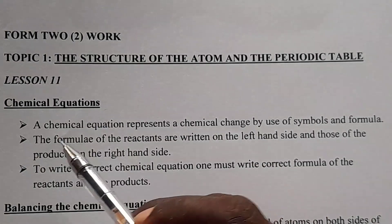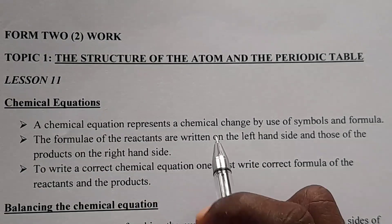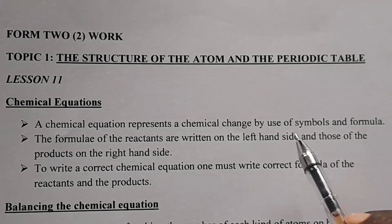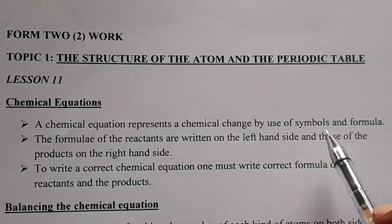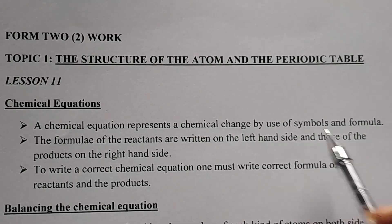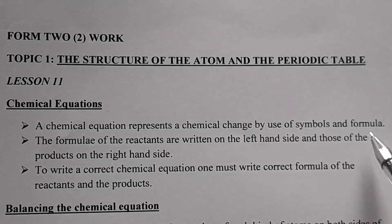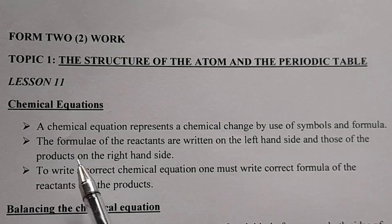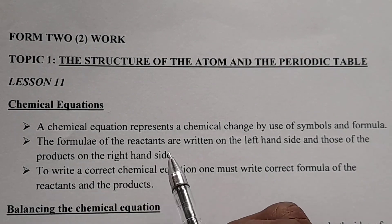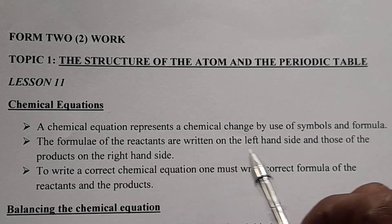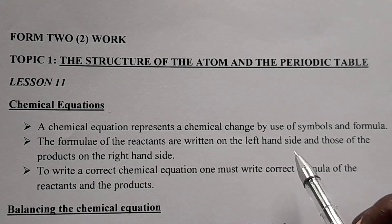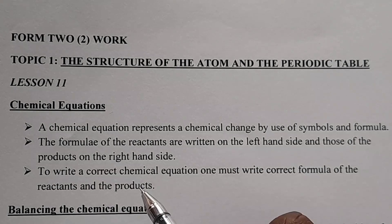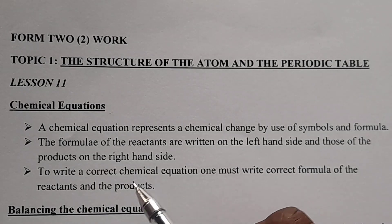A chemical equation represents a chemical change by use of chemical symbols and also formulas. The formulas of the reactants are written on the left-hand side, and those of the products are written on the right-hand side.